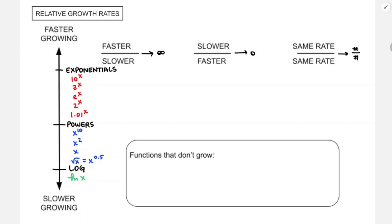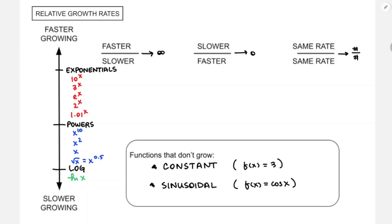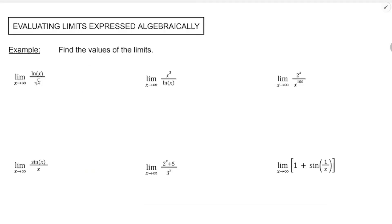There are also some functions that don't grow at all — like a constant function or a sinusoidal function like sine x or cosine x, which just increase and decrease repeatedly. For example: log x versus square root x as x approaches positive infinity — log is the slowest growing thing we have, so square root x grows faster, the denominator grows faster, and the limit equals 0. For x to the 3 divided by natural log x: log x is the slowest, x to the 3 grows faster, so the numerator grows faster and the limit is positive infinity.